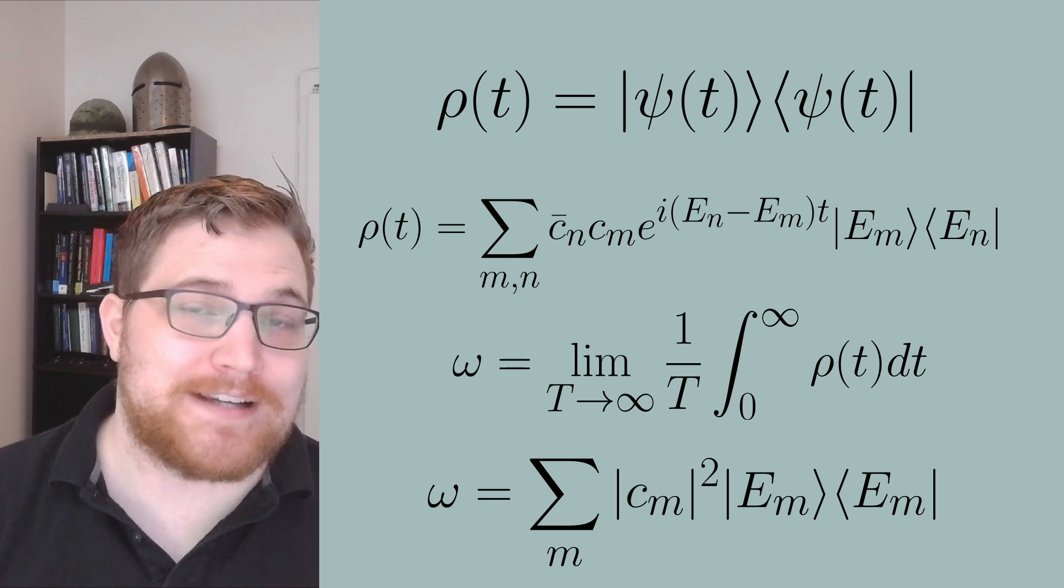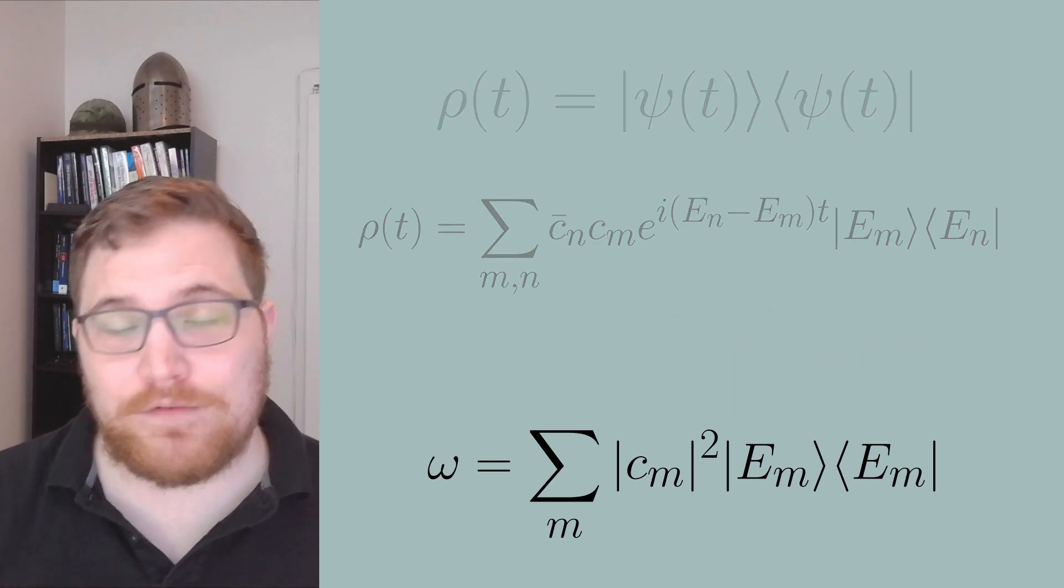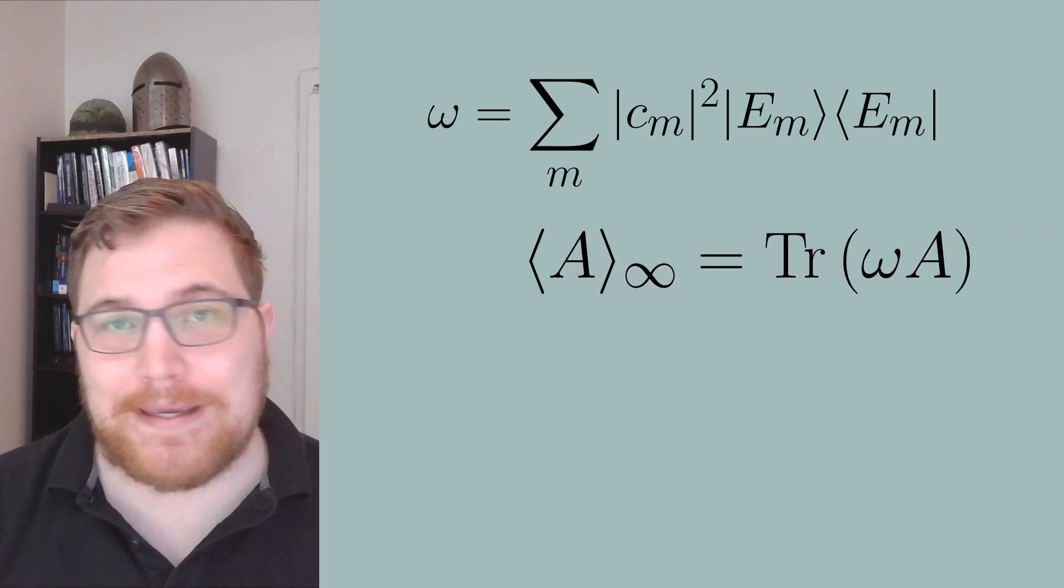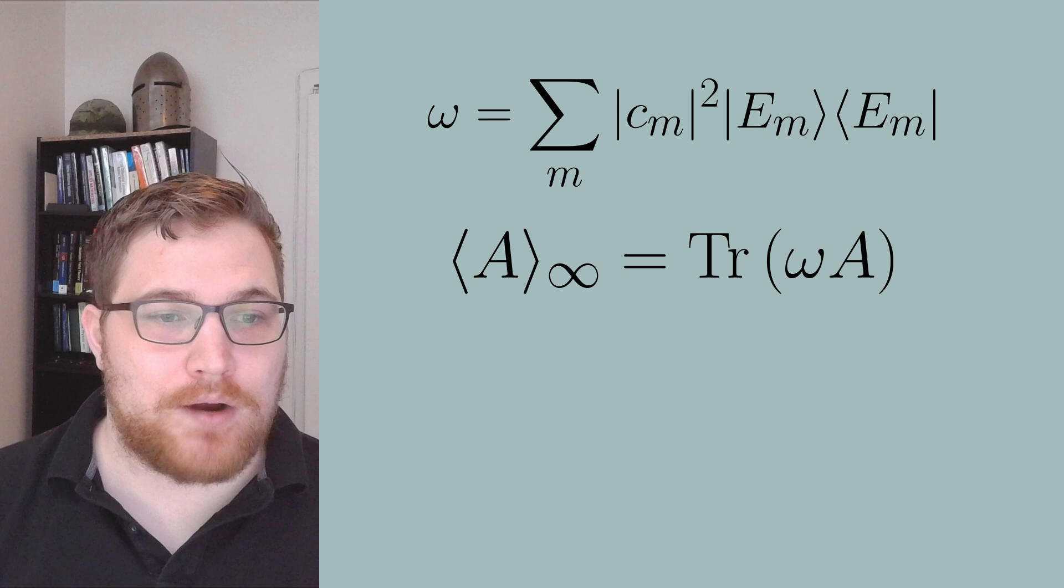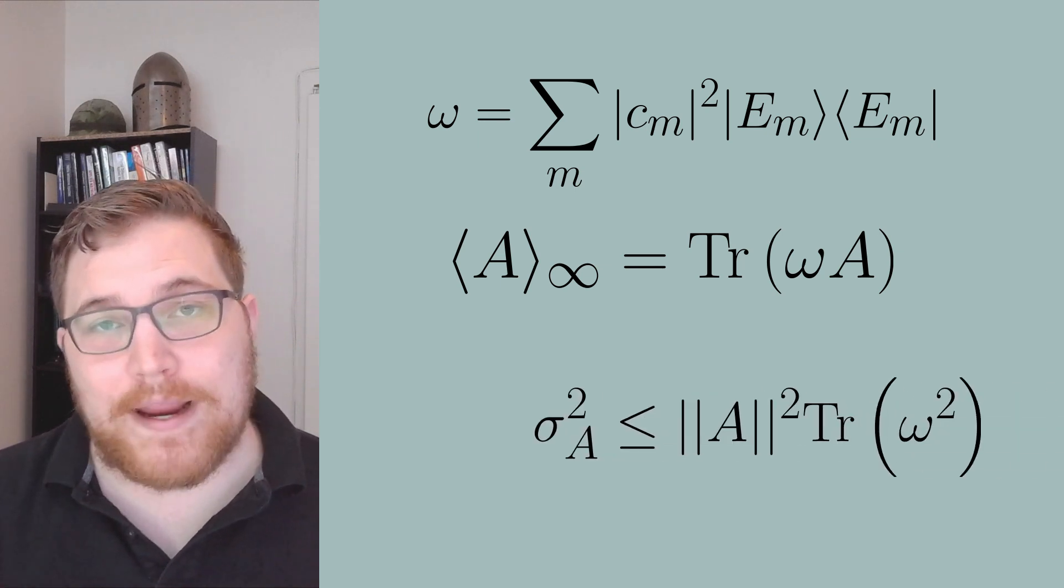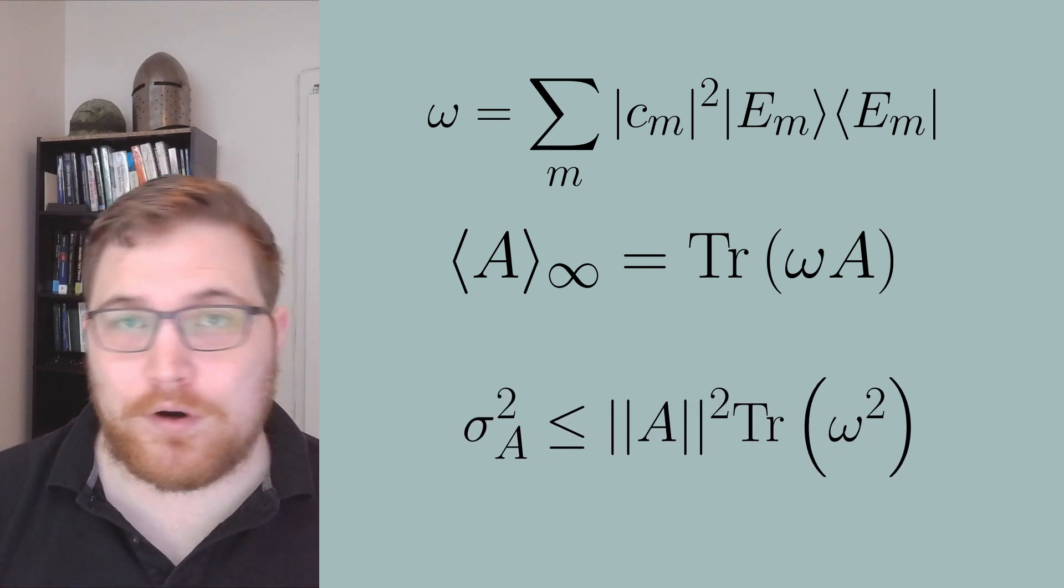So for example, we could rewrite the infinite time average of the expectation value of our observable a in the following way in terms of omega. We can then look back at our bound and we could rewrite it in terms of the purity of omega.